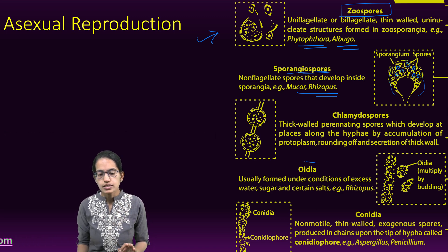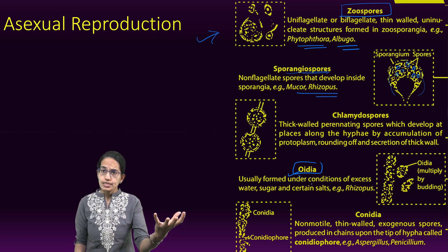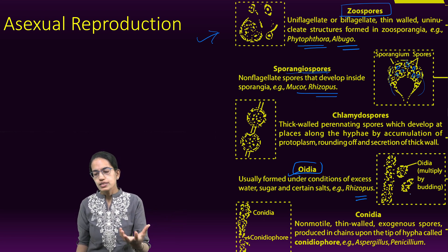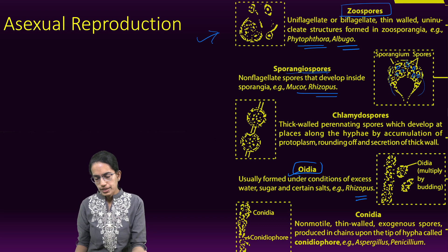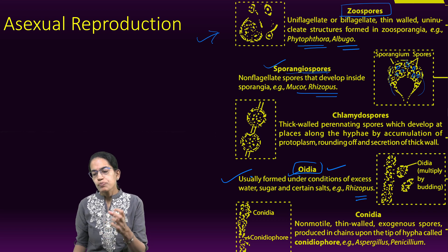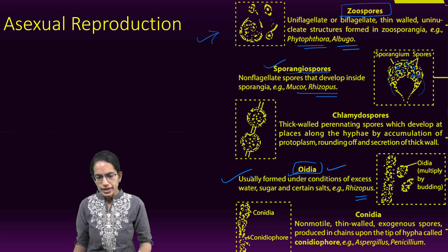The next is Oidia. Oidia is formed when there is an excess of water, sugar, or salt. Rhizopus is actually an example for this — Rhizopus reproduces by Oidia or sporangiospores, and here they multiply by the process of budding.